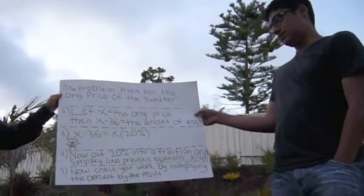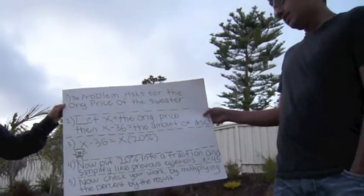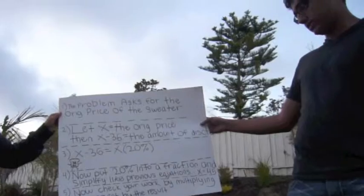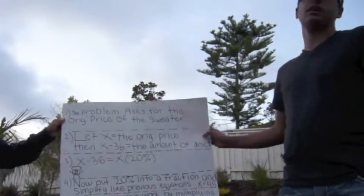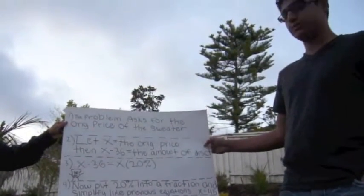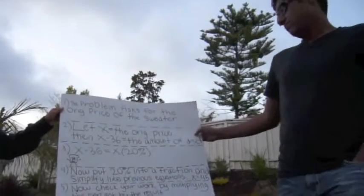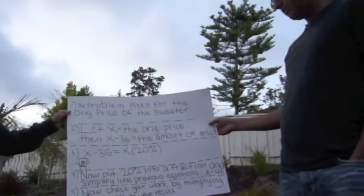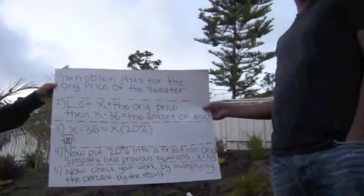Put 20% into a fraction and simplify like previous equations. X equals 45. Now check your work by multiplying the percent by the result, and you will see what you found.